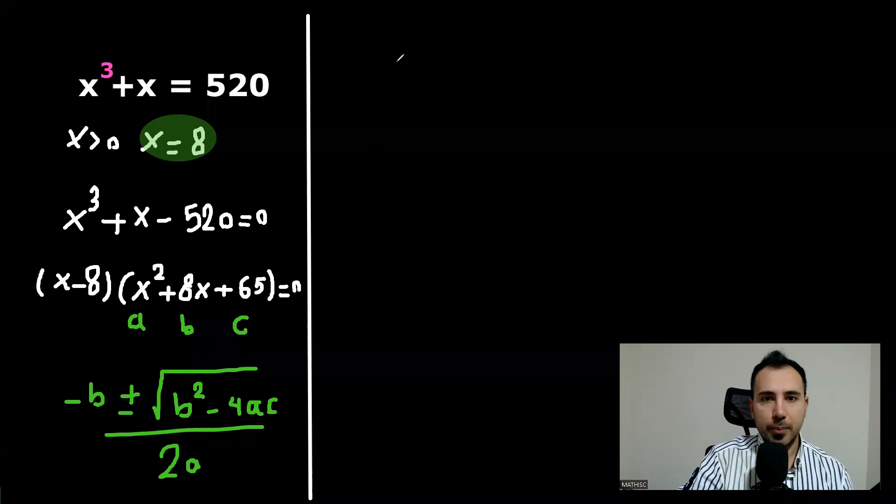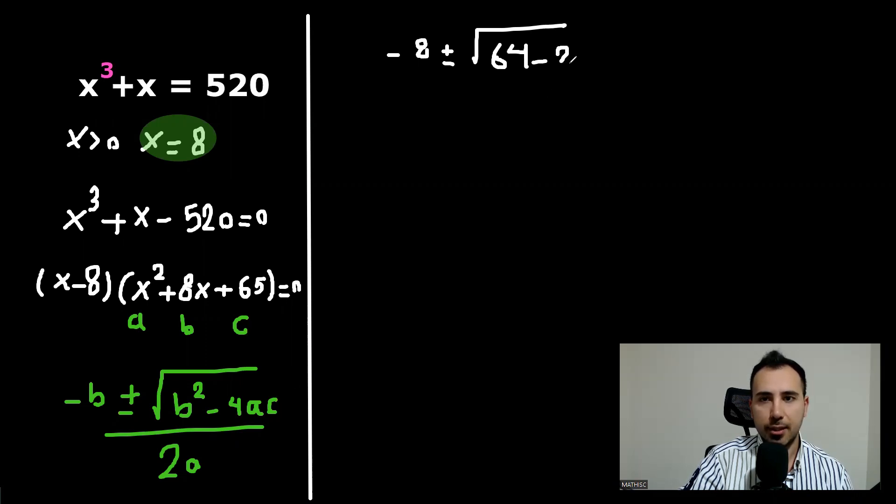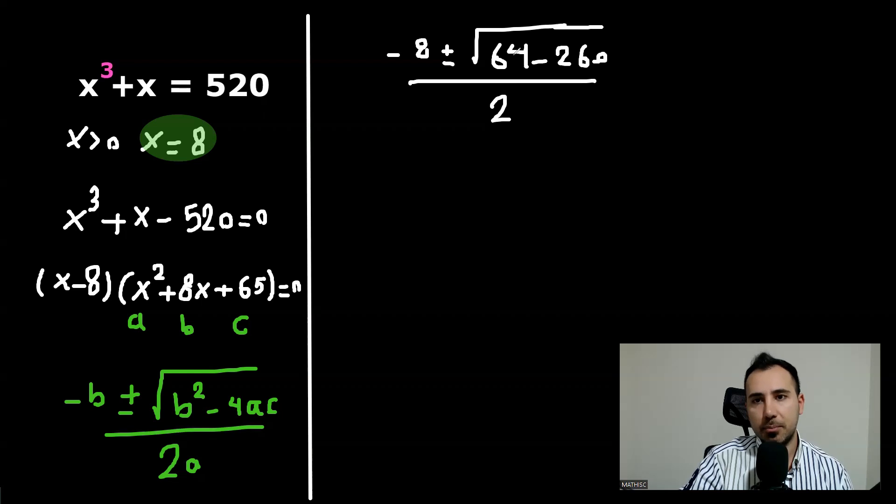Minus B will be negative eight. Positive, negative. B squared will be 64. 64 minus 4AC will be 260 divided by 2. So if I want to simplify this, it will be, again, what is 64 minus this? 196. It will be negative eight.